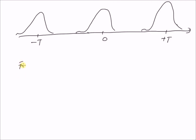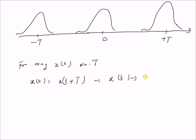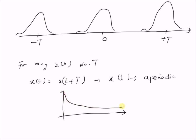For any signal x(t), if there is no capital T such that x(t) equals x(t + T), then x(t) is not a periodic signal. That means the signal structure does not repeat with time. For example, an exponential function e^(-t) is an aperiodic signal.